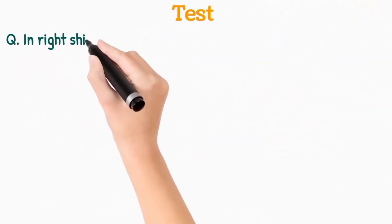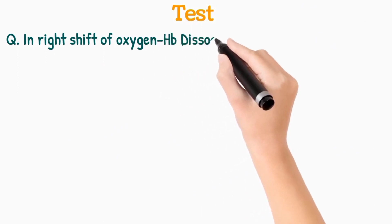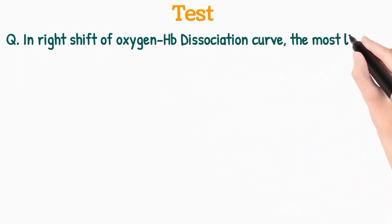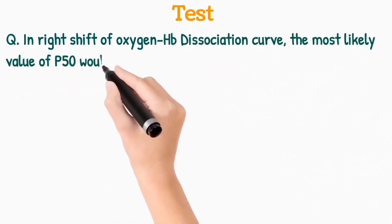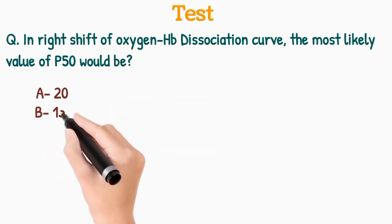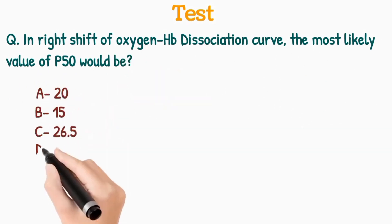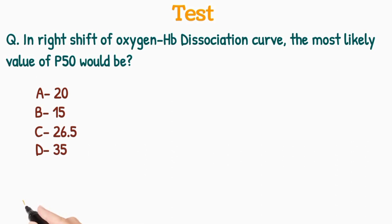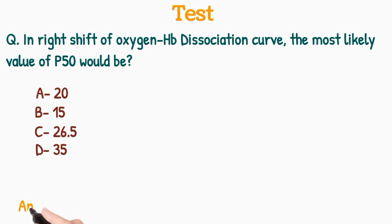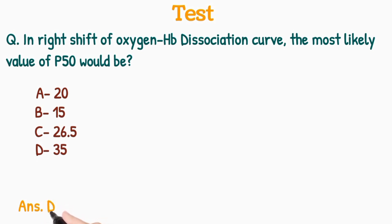Question: In right shift of the oxygen hemoglobin dissociation curve, the most likely value of P50 would be: A. 20, B. 15, C. 26.5, or D. 35. In right shift, the P50 value is greater than 26.7, that is 35 mmHg. So the correct option is D.